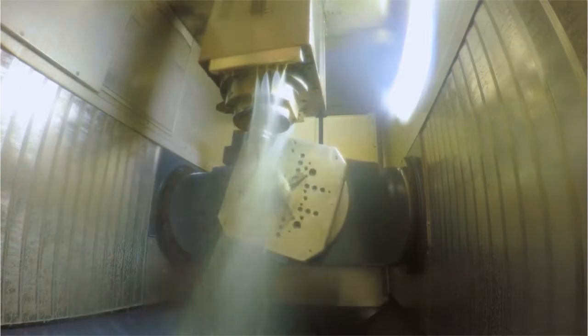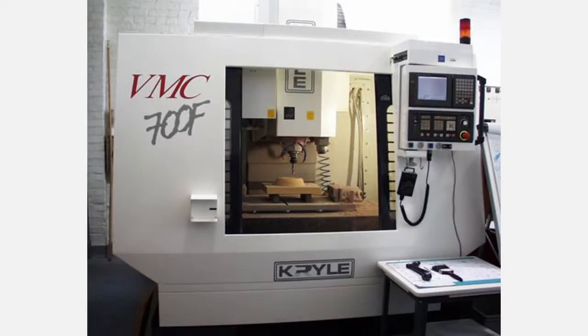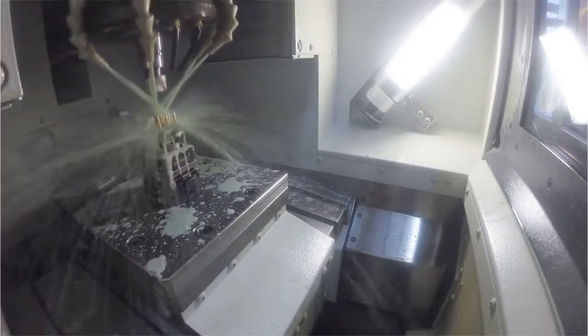The example is a machining operation — a fairly typical process for New Hampshire manufacturing: a CNC metal machining process where the computer controls the cutting action of the machine. A milling machine is used at a mechanical metalworking shop to cut stainless steel. Water soluble coolant is used to protect the cutting bit — the part doing the cutting — and the blank, which is the piece being cut. Here in the picture you can see one of these computer numerically controlled CNC milling machines cutting away at a part.